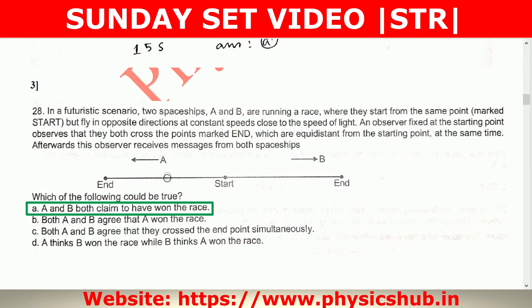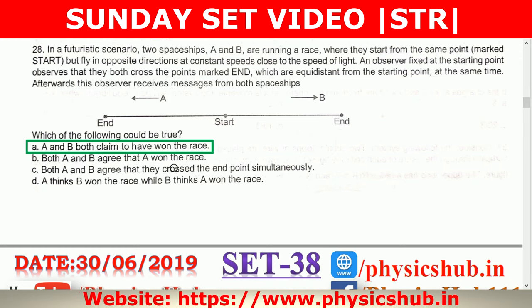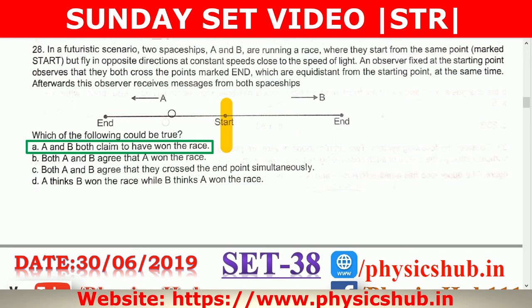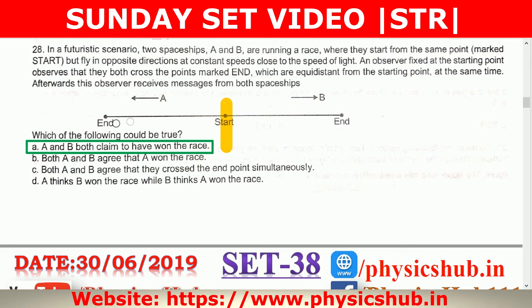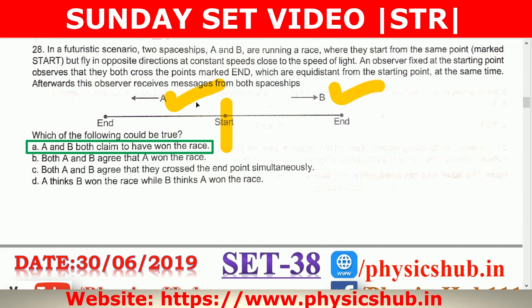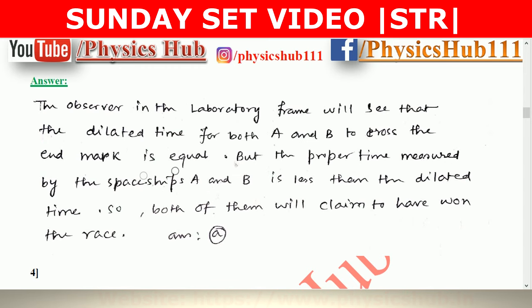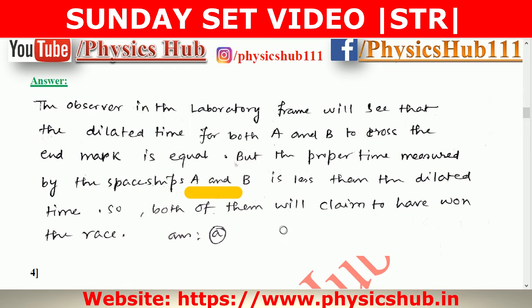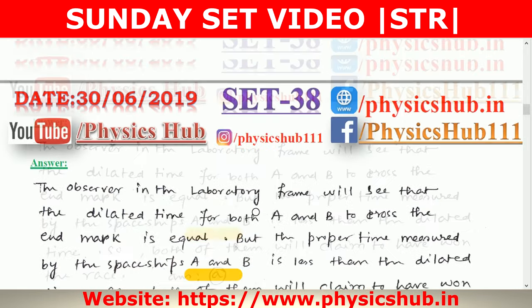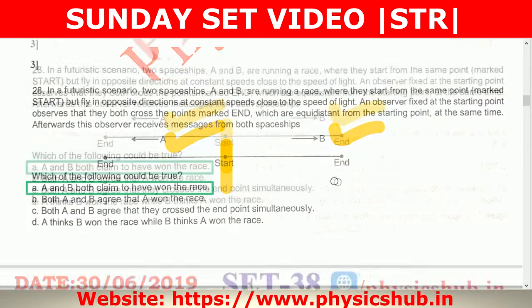Question 3: In a futuristic scenario, two spaceships A and B run a race starting from the same point but fly in opposite directions at speeds close to the speed of light. An observer fixed at the starting point observes that both cross points marked 'end', equidistant from the start, at the same time. The observer receives messages from both spaceships A and B. The dilated time for both crossing the end mark is equal in the lab frame, but the proper time measured by each spaceship is less than the dilated time. Both A and B will think they won the race, so option A is correct.